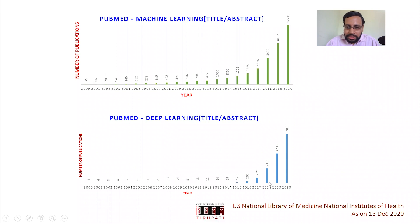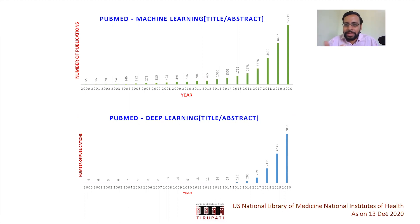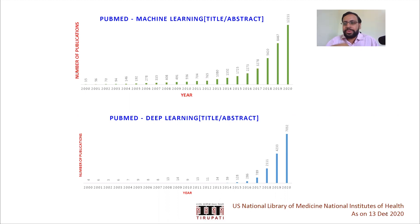Deep learning in medical imaging picked up reasonably from 2017 — around 1,500, then around 2,000, then around 3,000 publications. There will be papers where you might not call it deep learning or might call it deep learning with some aberration, but since we are considering thousands of papers, this would reasonably represent the trends.